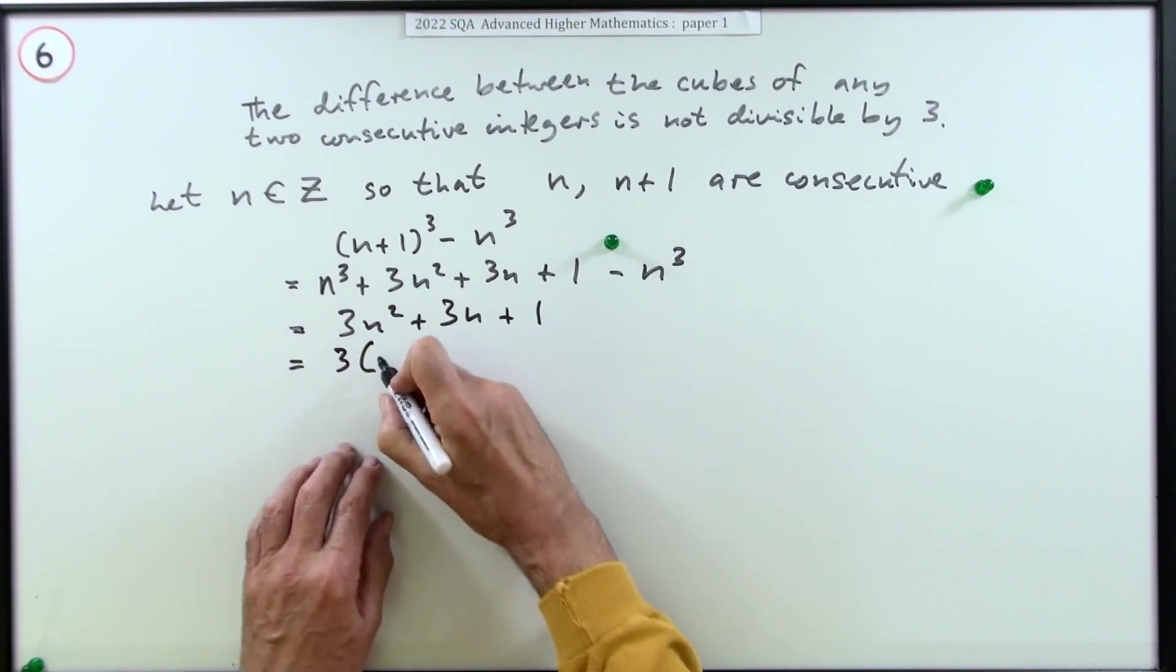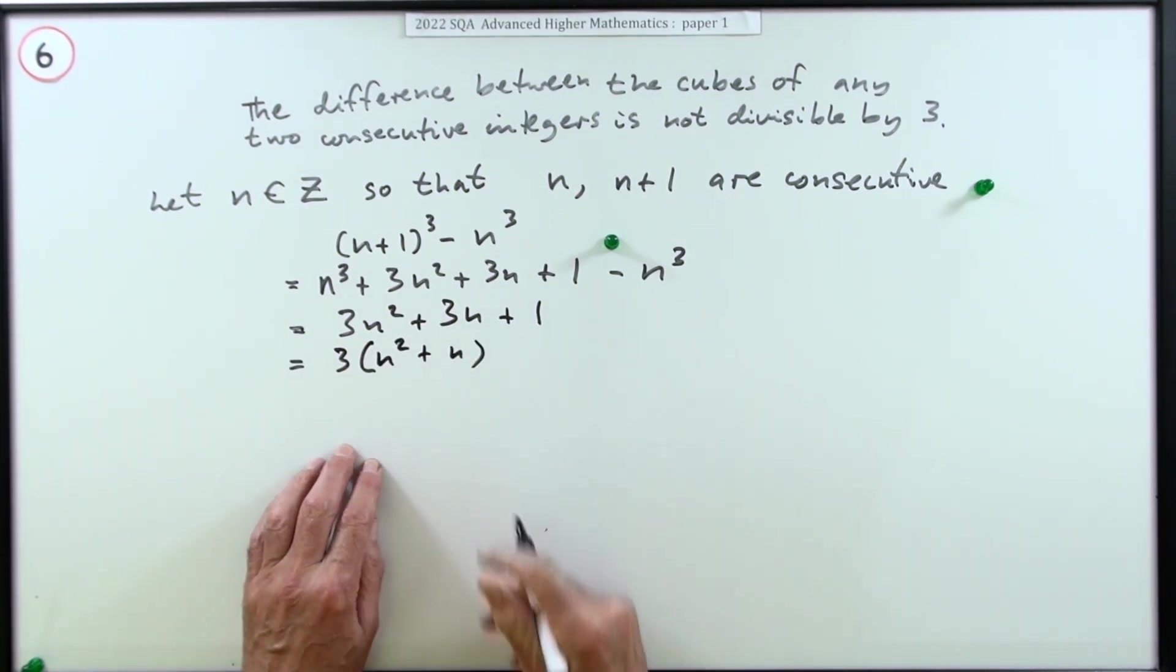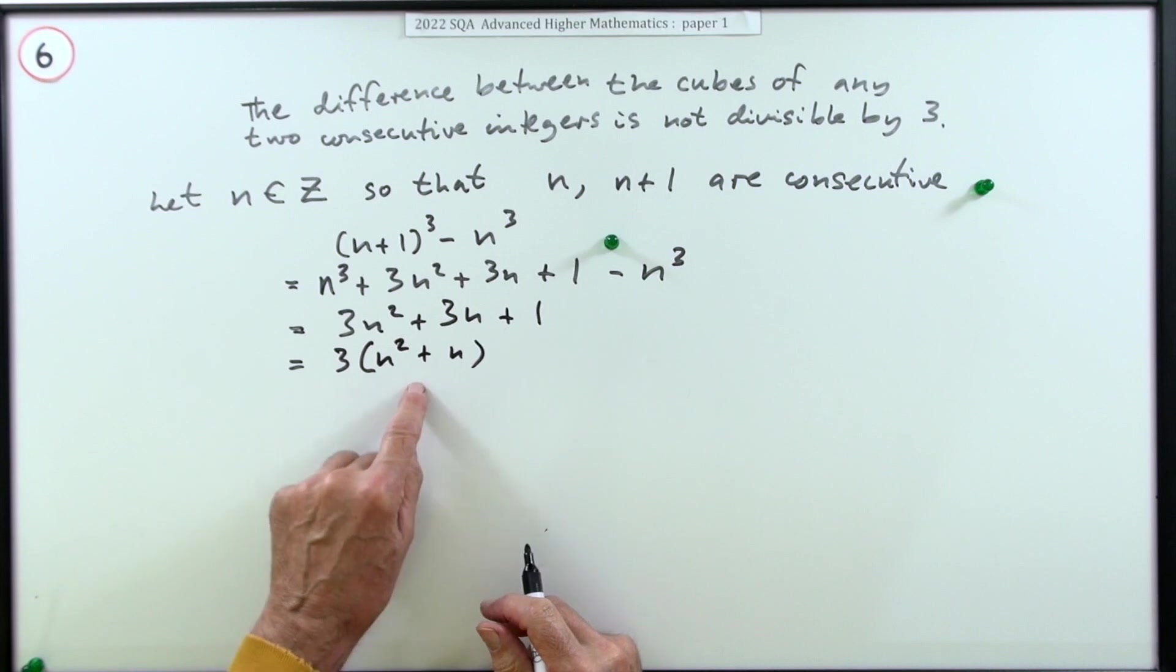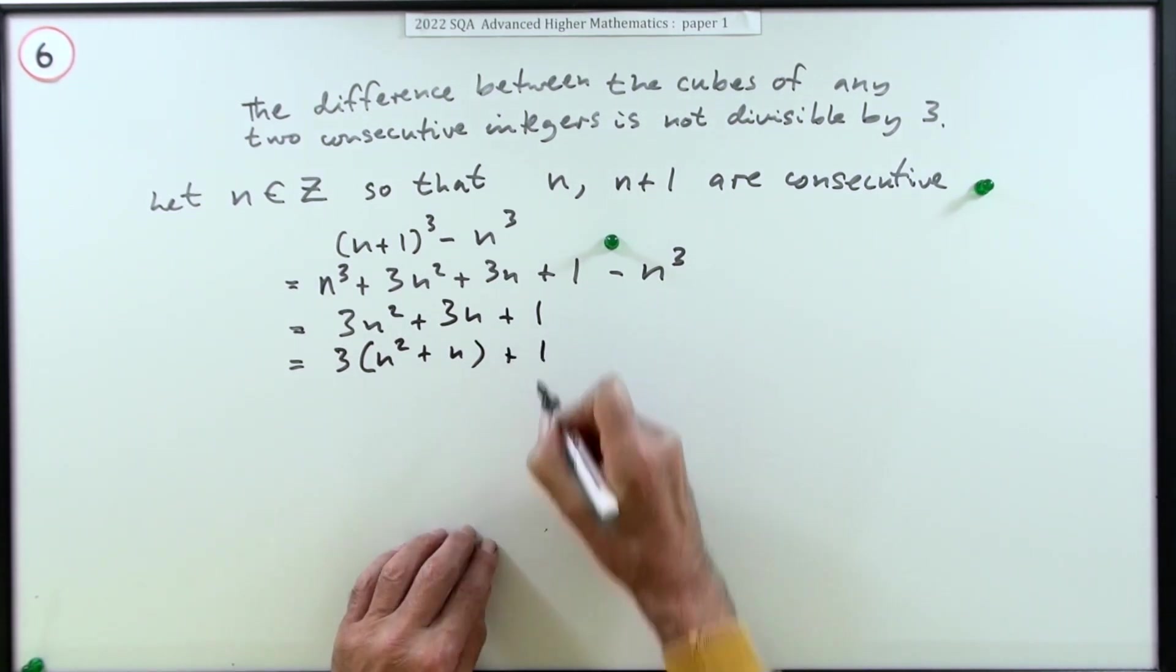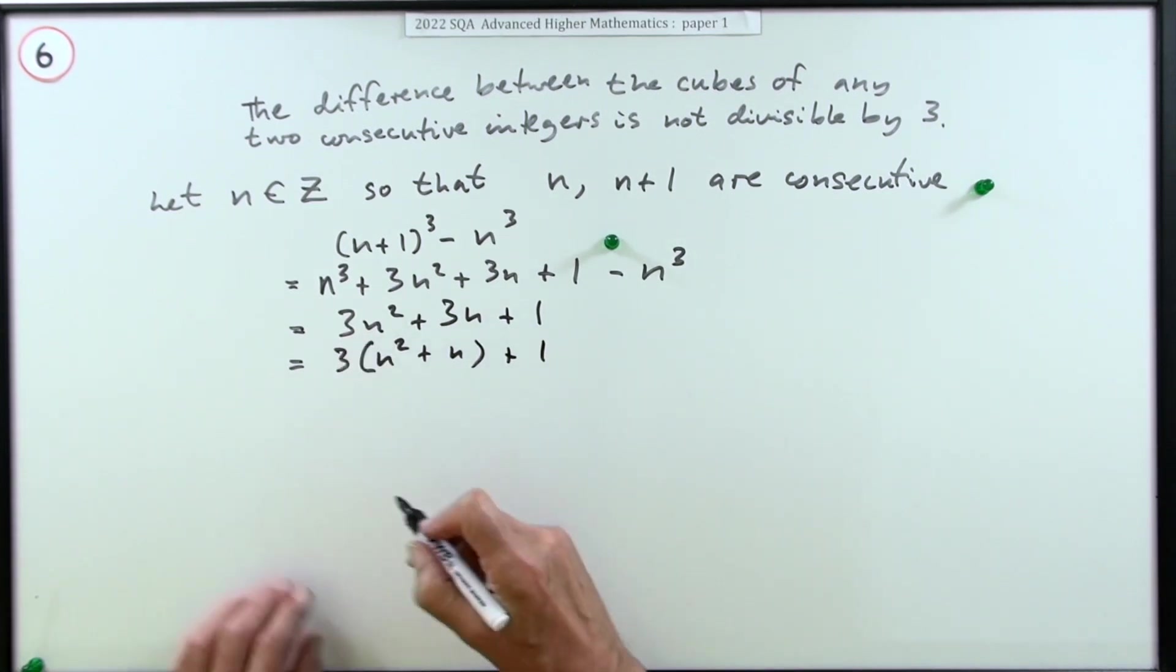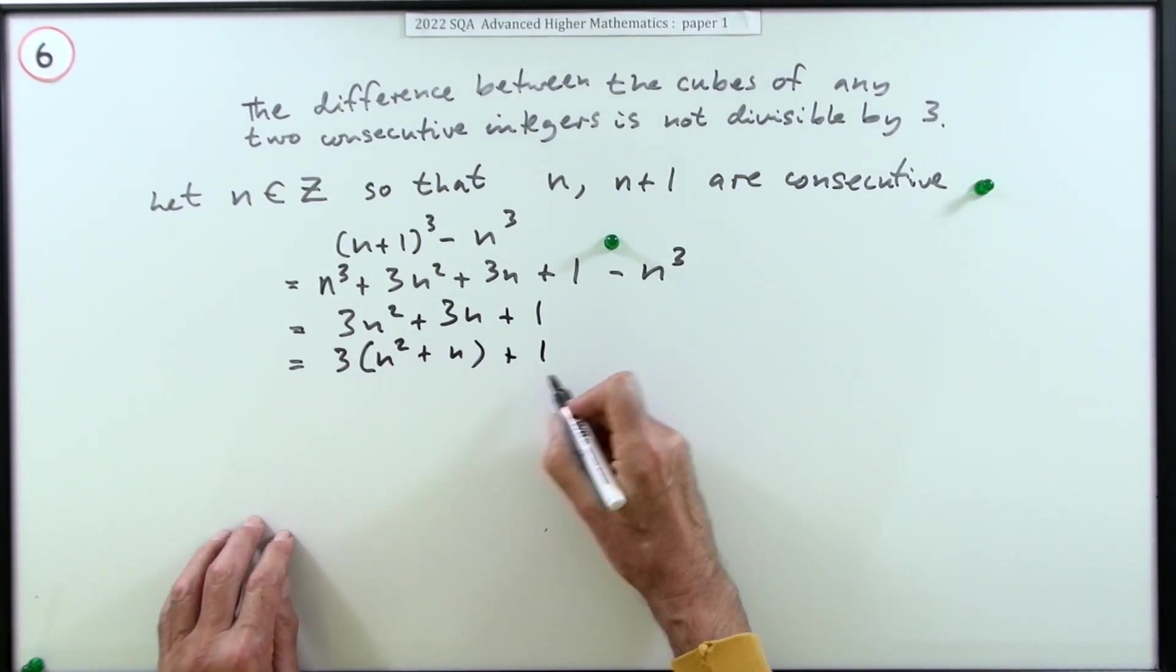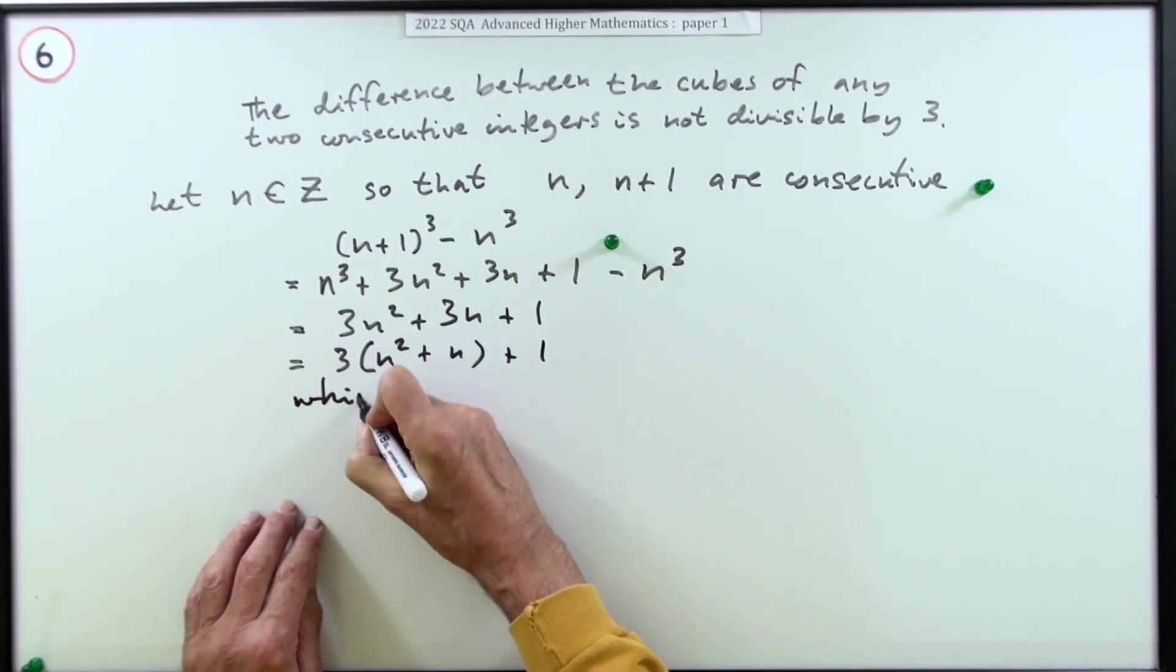That's clearly a multiple of three, so that's clearly divisible by three. But when you add one onto it, it's not. Now I can finish off by saying equals that, which is not divisible by three.